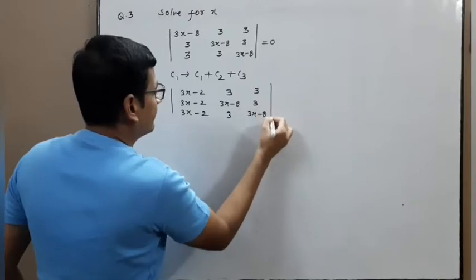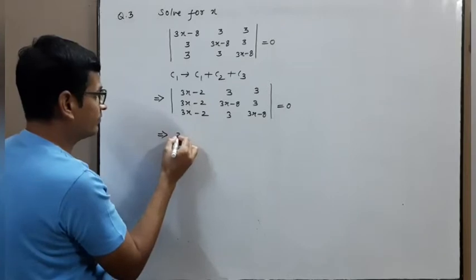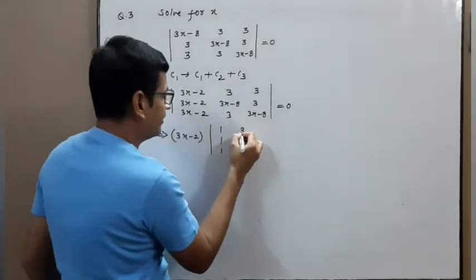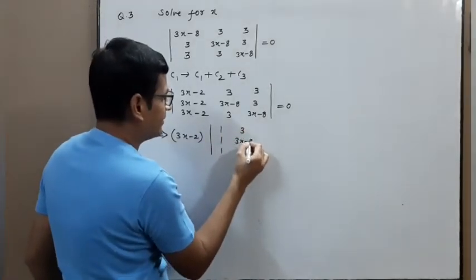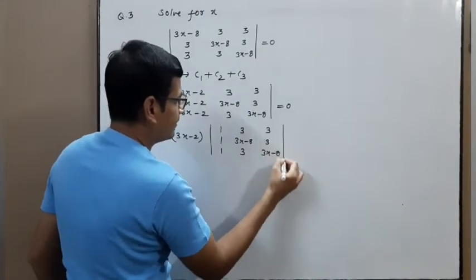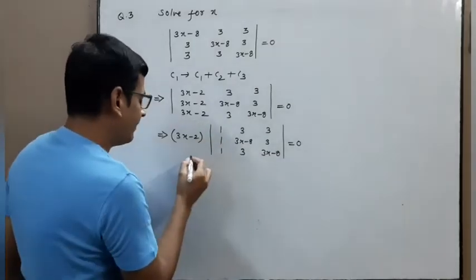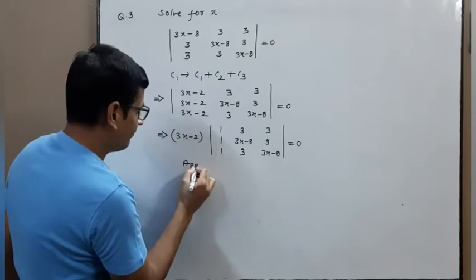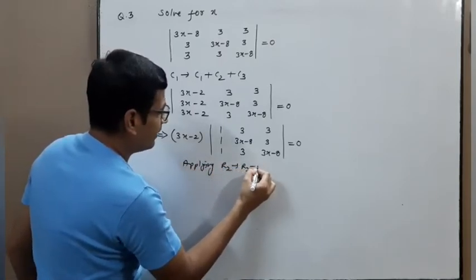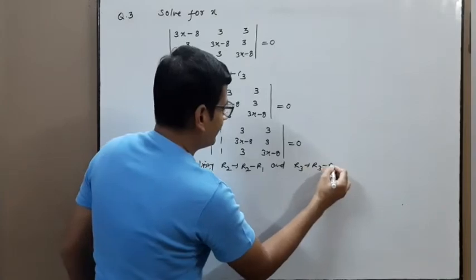Taking common (3x−2) from C1, we get 1, 1, 1 in column one, with 3, (3x−8), 3 and 3, 3, (3x−8) remaining. Since there are three 1s in column 1, apply R2 → R2 − R1 and R3 → R3 − R1.